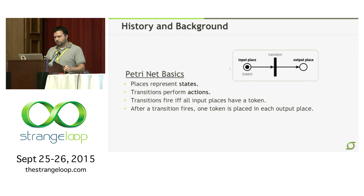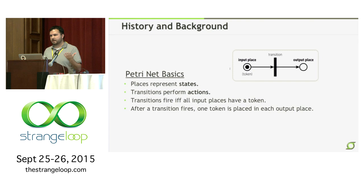In Petri nets, you basically have places and transitions — those are the only two concepts other than directed arcs. You can only connect a place to a transition and a transition to a place, so it's a bipartite graph representation. They evolve very simply: the only rule is that a transition will fire if and only if all of its input places have a token, and after they fire they place a token in all of their outputs. For that reason there's actually a pretty large mathematical foundation to these — people have analyzed their behaviors and they're well understood.